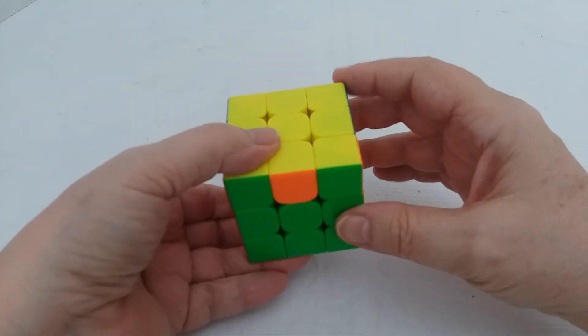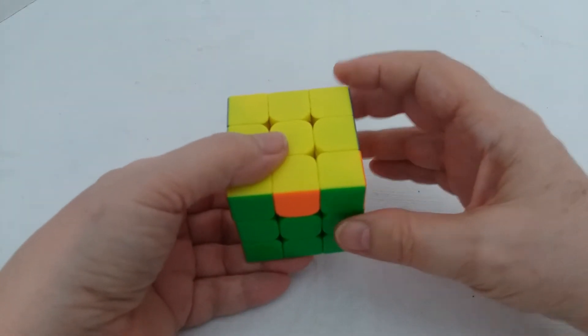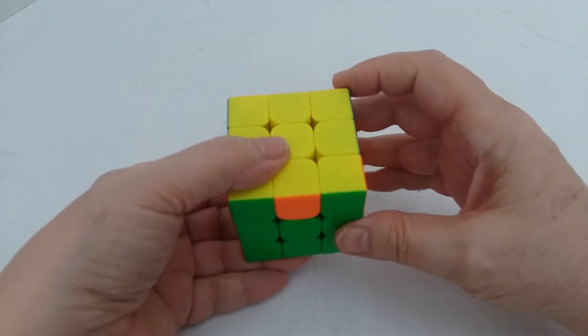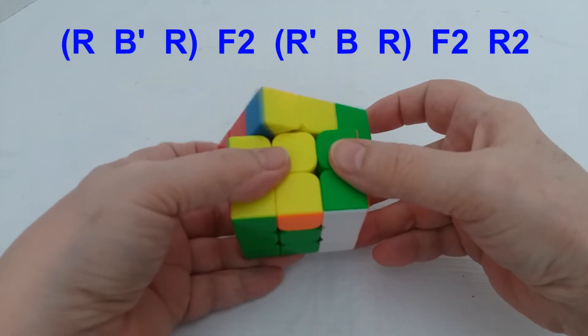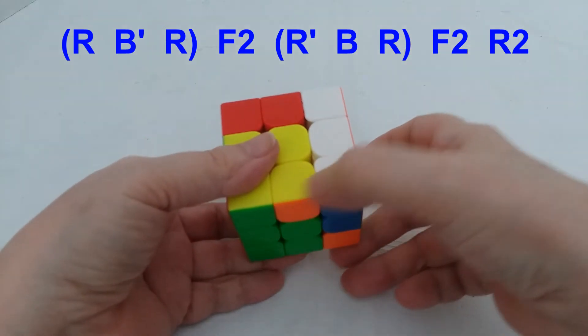I do, and you can work with finger tricks and obviously how you hold it, but here's the basic algorithm. So I do an R, a B prime, another R, and then F2.